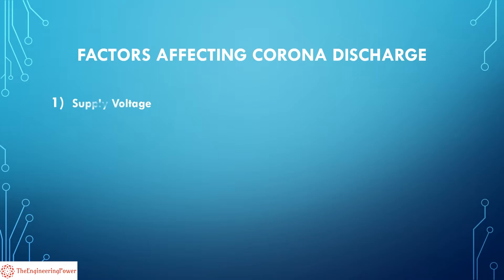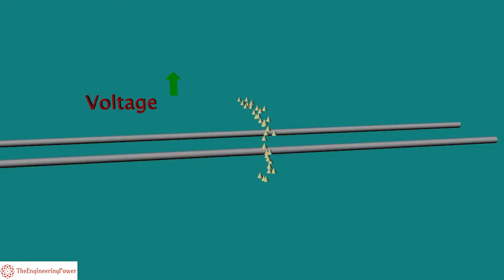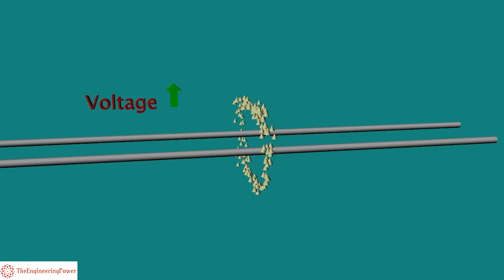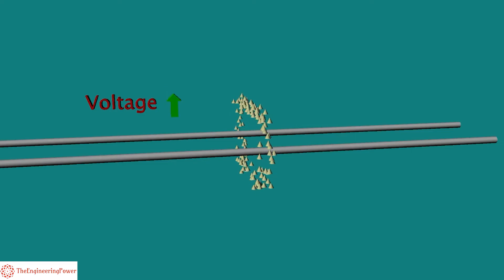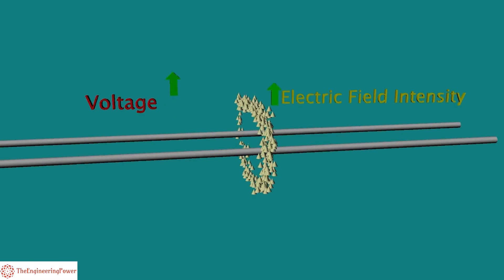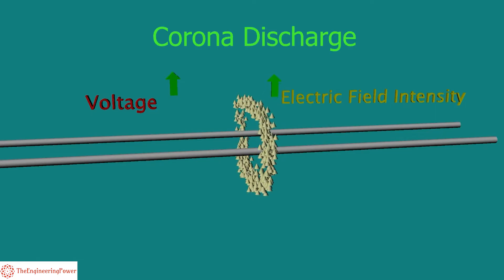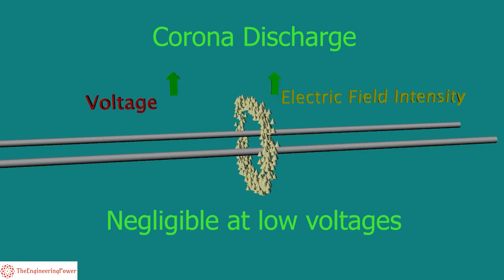The most important factor is the supply voltage. Corona discharge depends upon the electric field intensity produced by the system voltage. With increasing system voltage, the electric field intensity will increase, resulting in an increase of corona discharge. Corona discharge is negligible at low voltages.